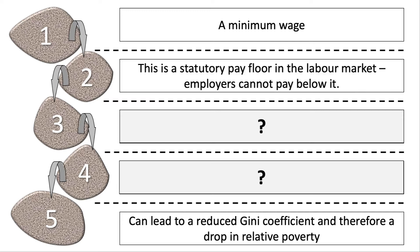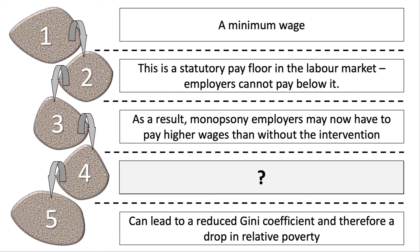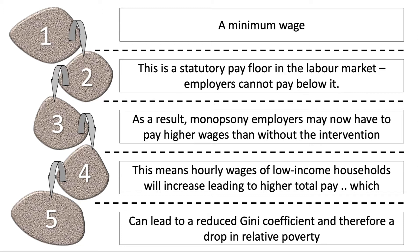Build a little bit more detail into your reasoning. A minimum wage is a statutory pay floor in the labour market - employers cannot legally pay below it. As a result, if you introduce a minimum wage, monopsony employers - employers that are big buyers of labour in a town or city - may now have to pay higher wages than without this intervention. This means that hourly wages of low-income households will increase, leading to higher total pay for those low-income households, which can then lead to a reduced Gini coefficient and therefore a drop in relative poverty.